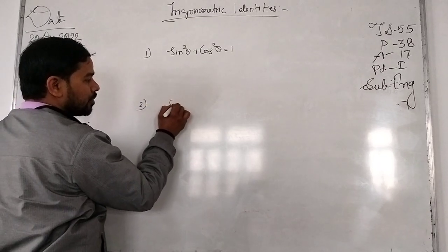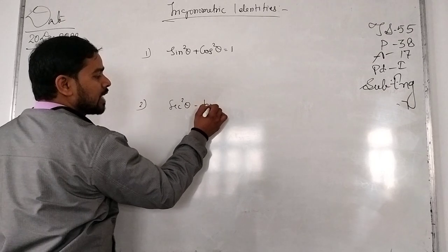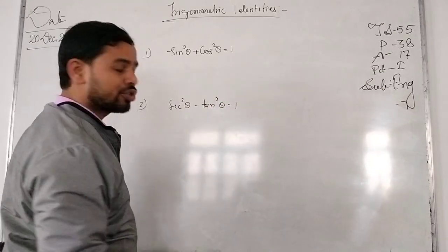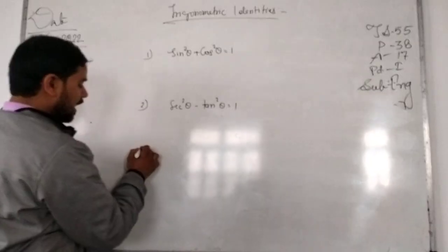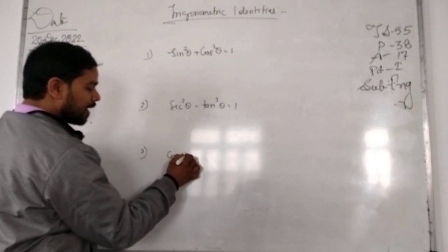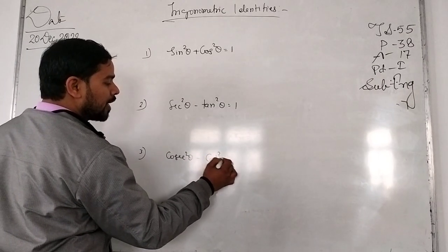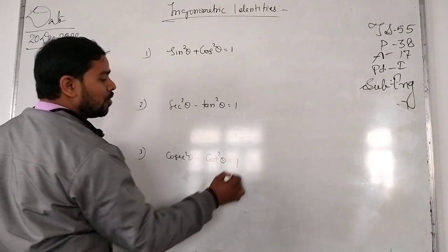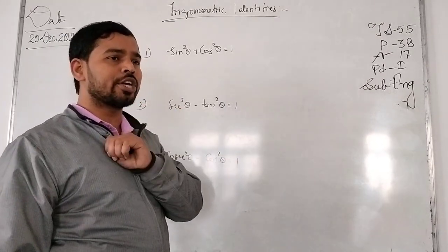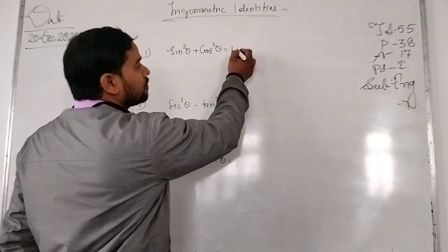The second is sec squared theta minus tan squared theta equal to 1. This is your second. And the third will be cosec squared theta minus cot squared theta equal to 1. These are generally the three Pythagorean Identities from which 6 Pythagorean ratios are also formed.